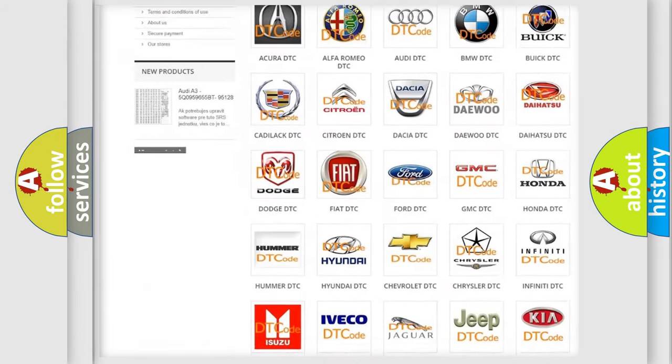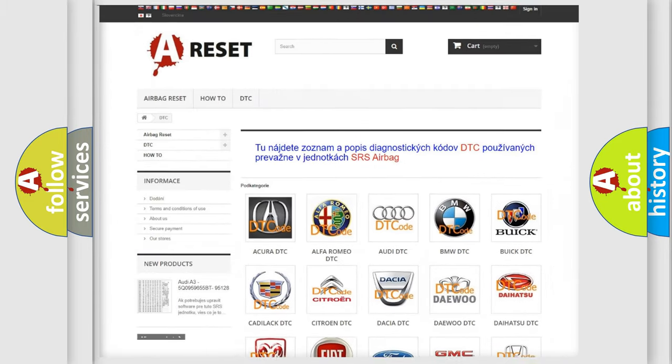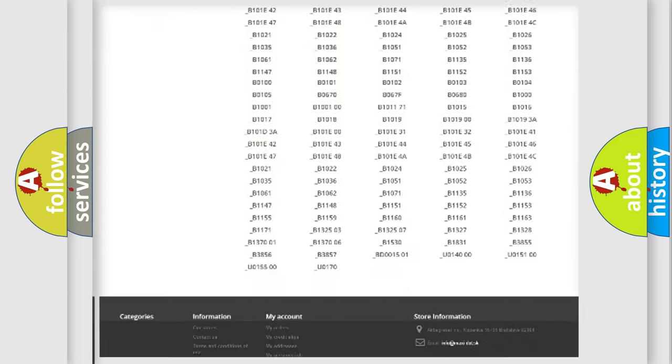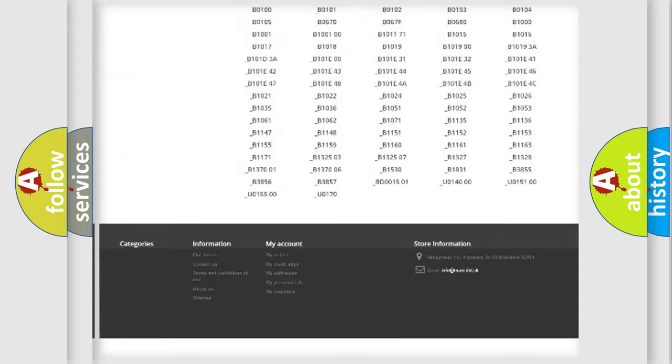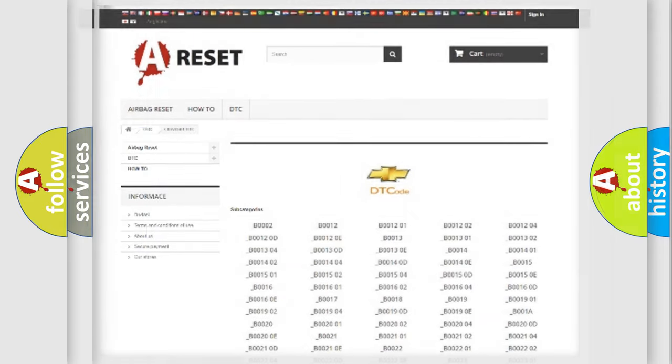Our website airbagreset.sk produces useful videos for you. You do not have to go through the OBD2 protocol anymore to know how to troubleshoot any car breakdown. You will find all the diagnostic codes that can be diagnosed in Chevrolet vehicles, and many other useful things.